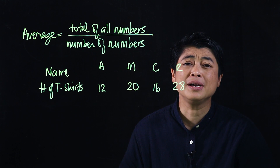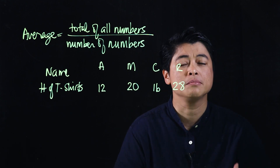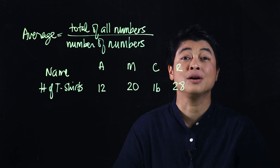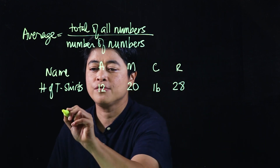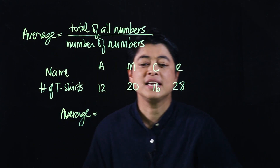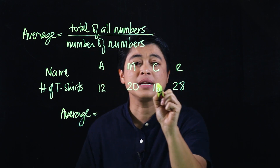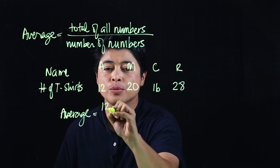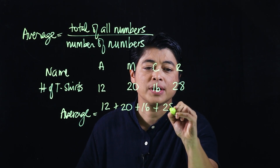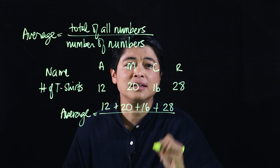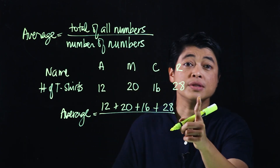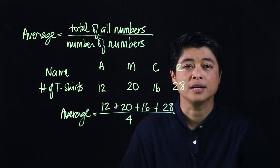The question is: what is the average number of t-shirts that each student sold? I'll show my way first and then the book's way — in the end they're the same, the book just makes it a bit longer. Following the formula: average equals the total of all numbers, so that's 12 plus 20 plus 16 plus 28, divided by the number of numbers, which is 4.